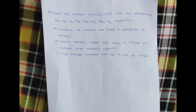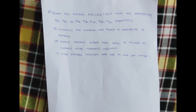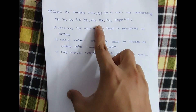Welcome to this channel. In this video we are going to discuss an example on how to construct a Huffman tree, how to create a variable length code, and after that find the average Huffman code size in bits per symbol. The question gives symbols a, b, c, d, e, f, g, h with probabilities 1/30, 1/30, 1/30, 2/30, 3/30, 5/30, 5/30, and 12/30 respectively.